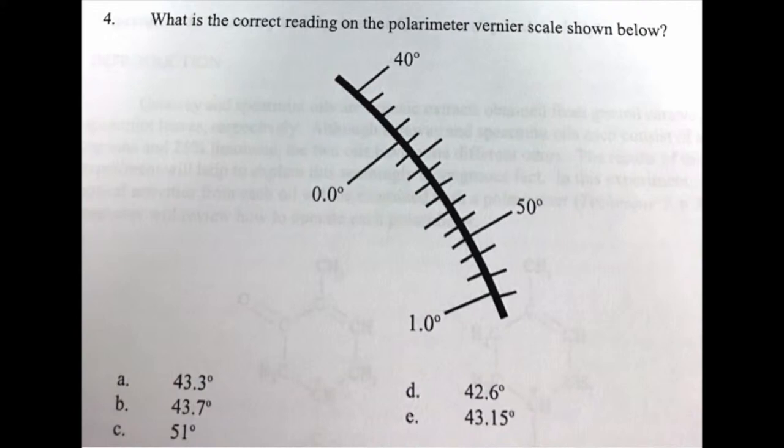The graduation mark on the vernier scale that matches up best with the outer scale looks to be the seventh graduation mark, indicating a 0.7 addition, so the answer would be 43.7 degrees.